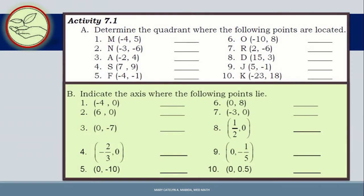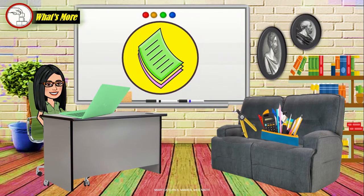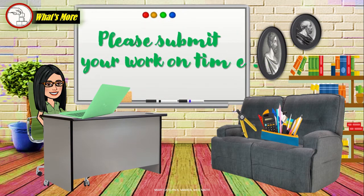Part B: indicate the axis where the following points lie. There are 10 numbers for you to work on. Let's take number 1: (−4, 0). Negative 4, 0 — it belongs to the X-axis. Very good. Again, answer on a separate sheet of paper and submit your work on time.